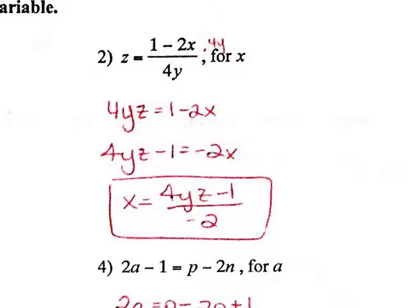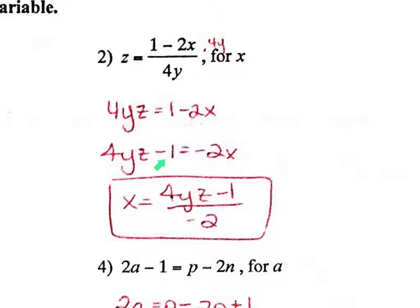Question 2 has a fraction in it, so we need to get rid of the fraction first. The first thing I did was multiply both sides by 4y. On the right, the 4y canceled and I was left with 1 minus 2x. On the left, when I multiplied by 4y, I get 4yz — everything bumped together means multiplication. I'm trying to get x by itself, so I moved the positive 1 by subtracting 1, then divided by negative 2 to get the final answer.